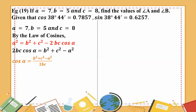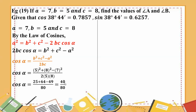b equals 5, c equals 8, a equals 7. Substituting these values: 5 squared plus 8 squared minus 7 squared, divided by 2 times 5 times 8.